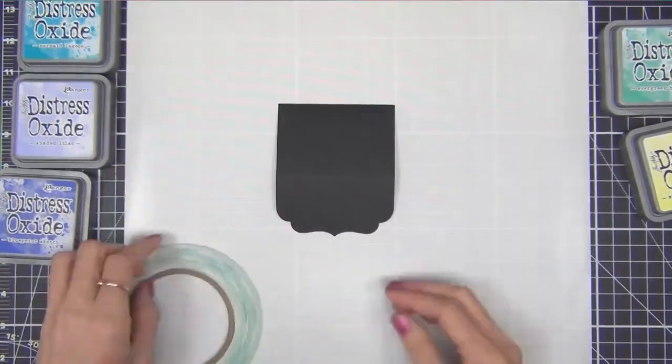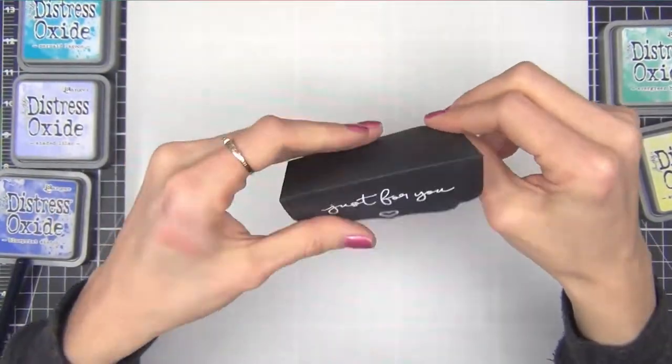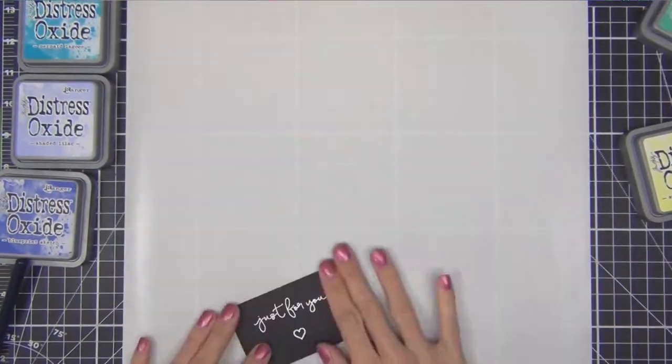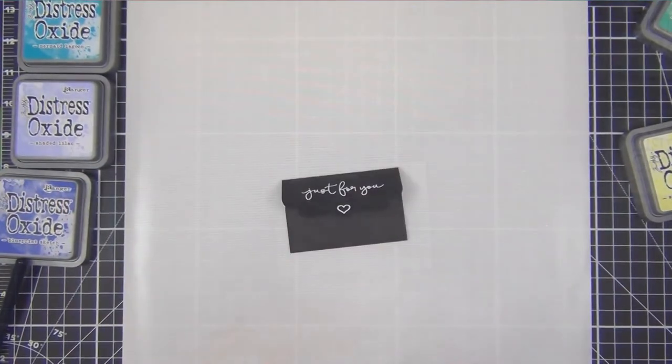I wanted there to be a little something on the flap so I chose to white heat emboss a just for you sentiment from Hero Arts.